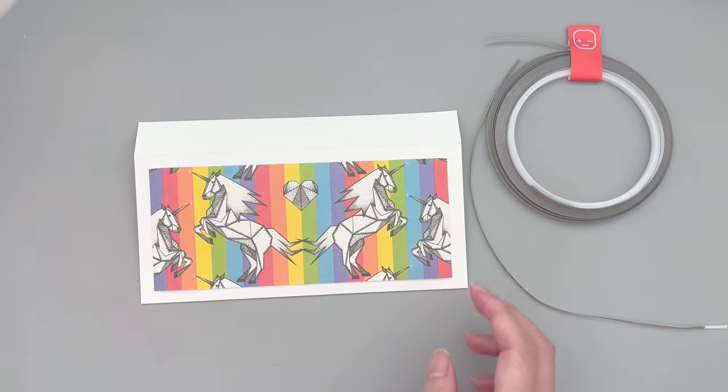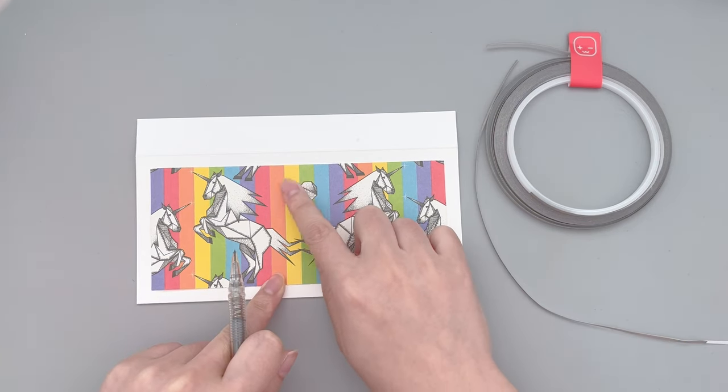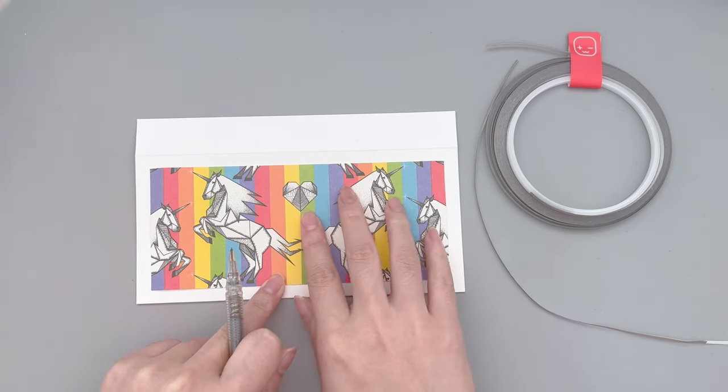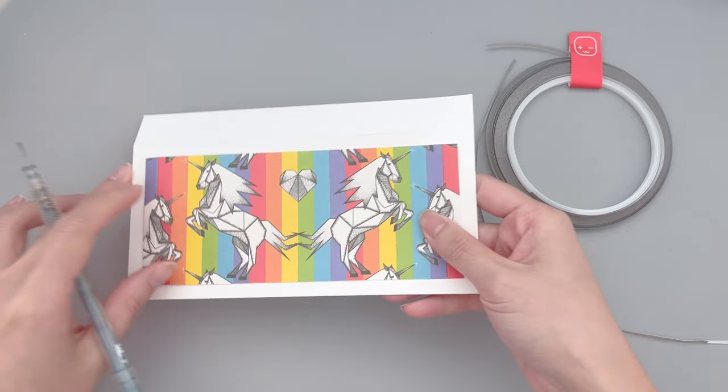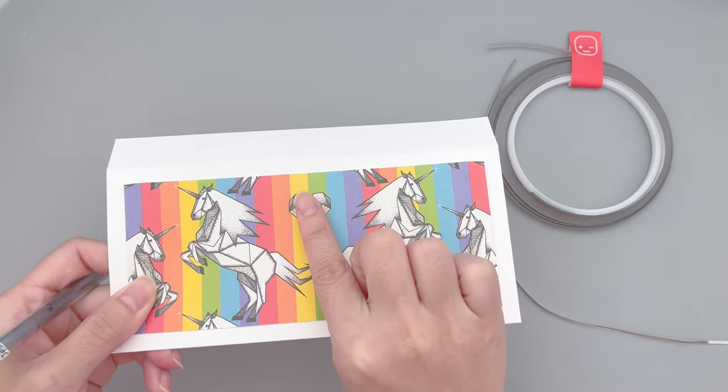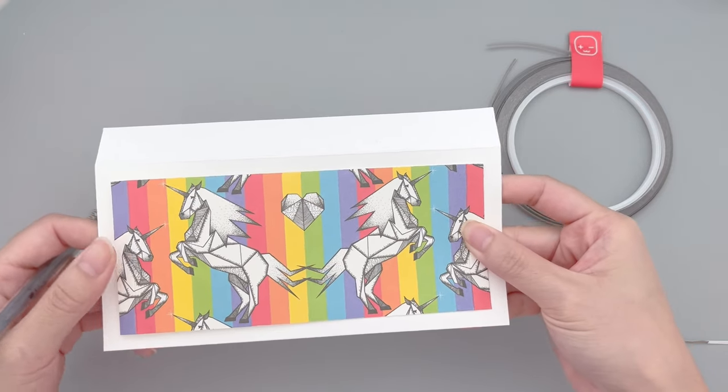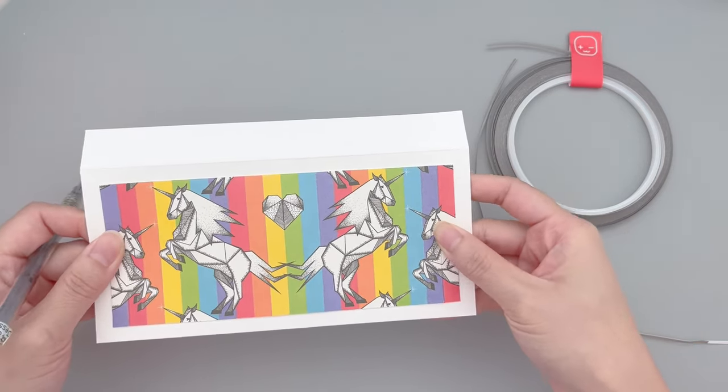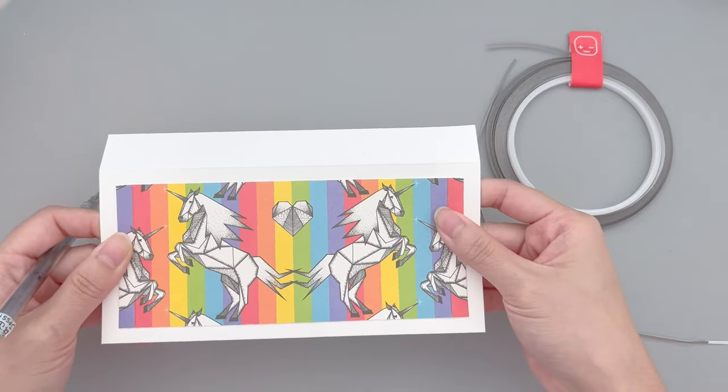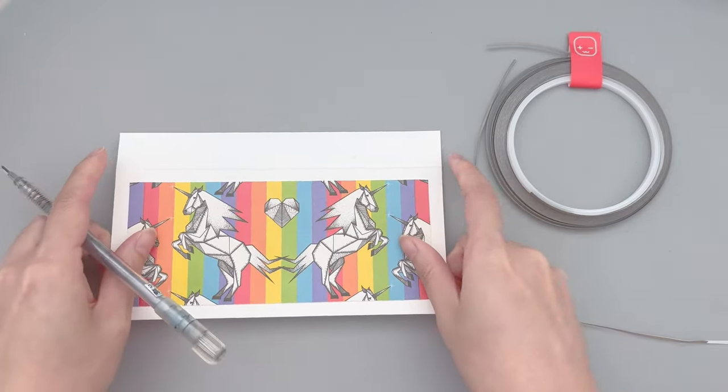First I want to mark out the places where I'll be placing the LED lights and also my battery. And this paper really had the perfect designs to incorporate these elements. I chose the heart in the middle to be the place of the battery. And then for the LED lights, I wanted to be at the very tip of the unicorn horn.